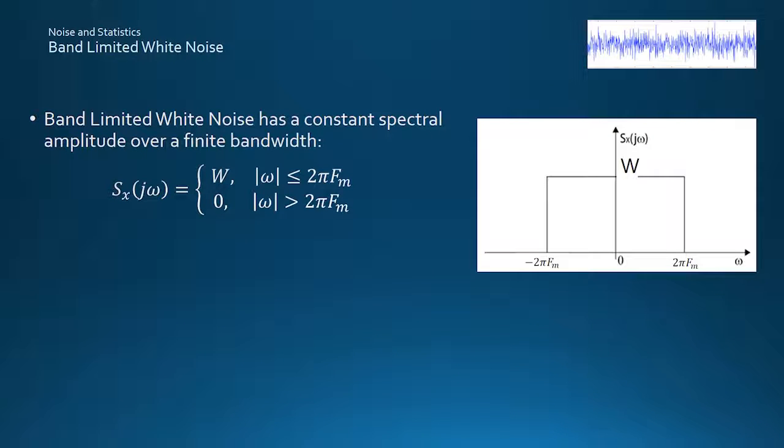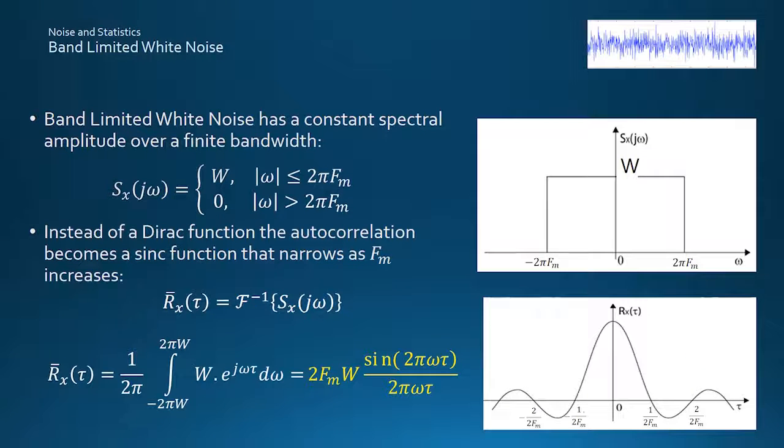In practice, however, as well as in computer simulations, noise signals can't stretch from infinity in either frequency or amplitude. Band-limited white noise has a constant spectral amplitude over a large enough but finite bandwidth, achieved by passing white noise through an ideal filter with a maximum frequency fm. The autocorrelation becomes a sinc function rather than a Dirac pulse, but it narrows approaching the pulse as the bandwidth is increased towards infinity. Incidentally, as its autocorrelation is zero at multiples of 1 over 2 fm, then taking samples at the Nyquist rate of 2 fm samples per second should keep them uncorrelated.